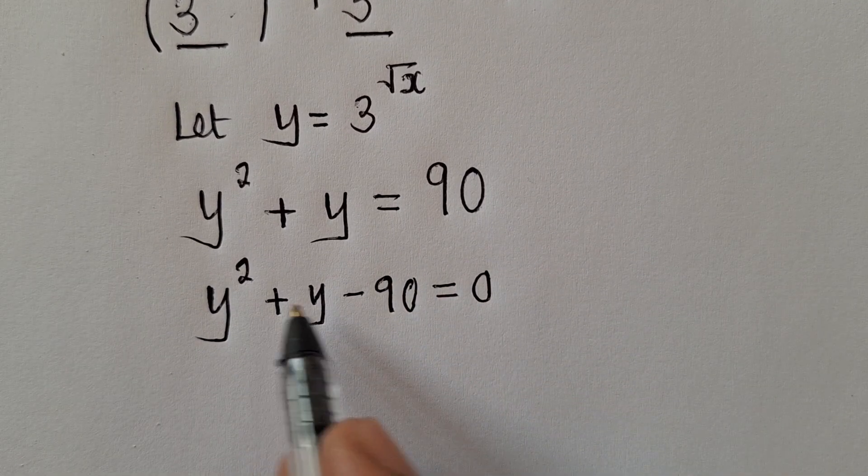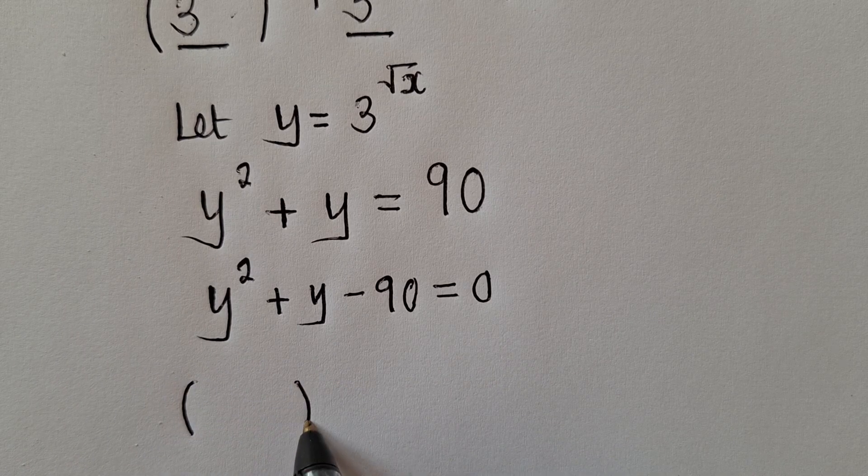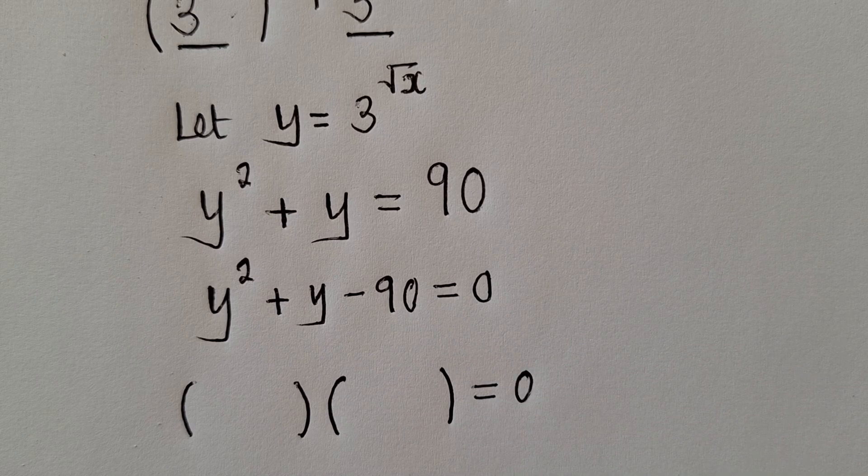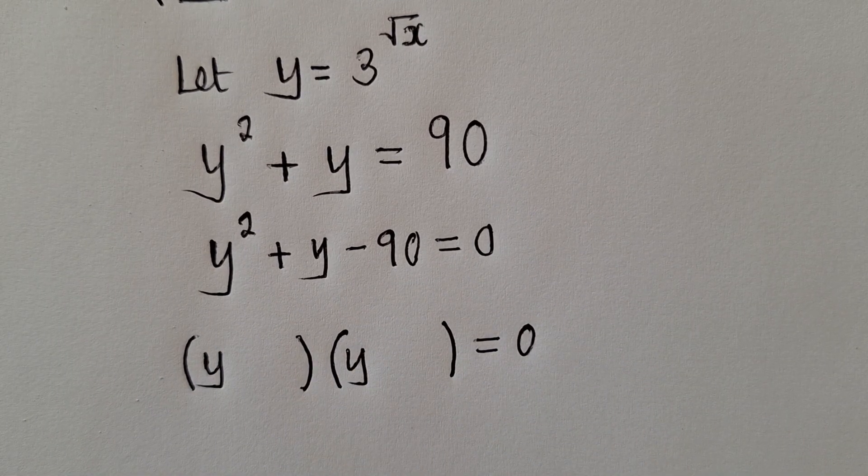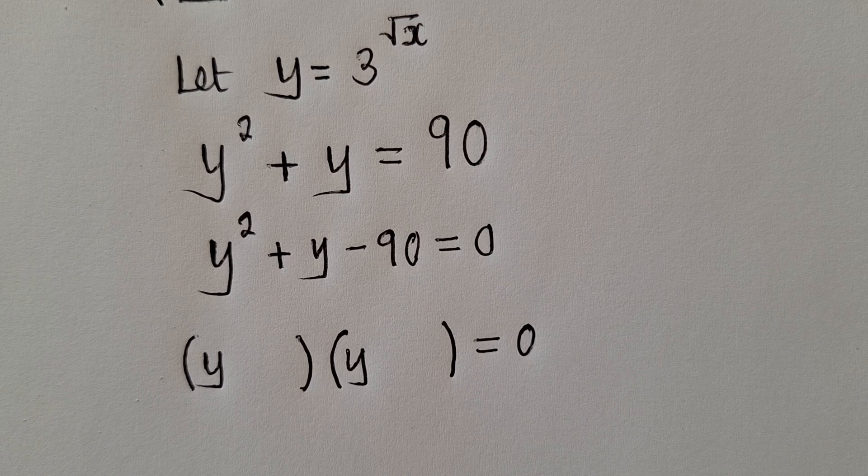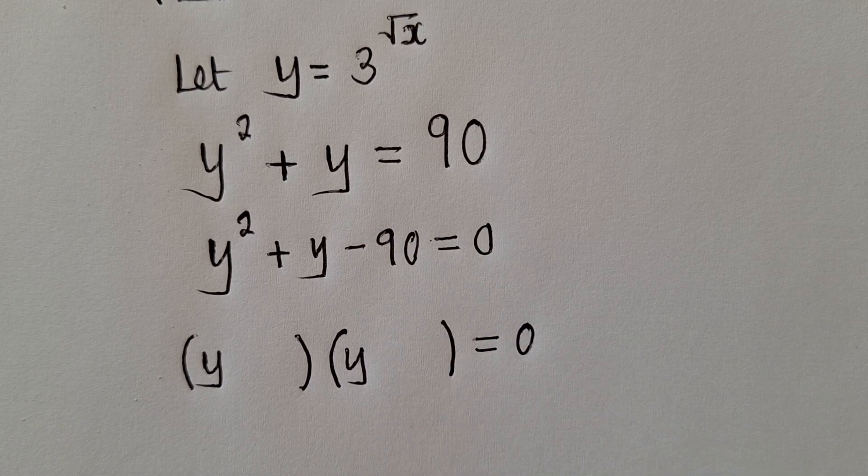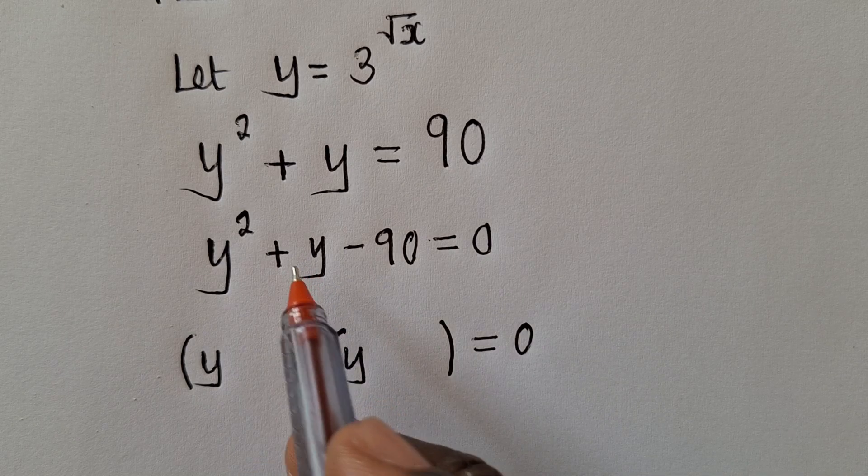So we solve this quadratic equation by factorization. And this is how it's going to come out. You're going to say y, even here y. We think of two numbers—when we multiply them, they give us negative 90. And those same two numbers, when we add them, they give us positive 1.